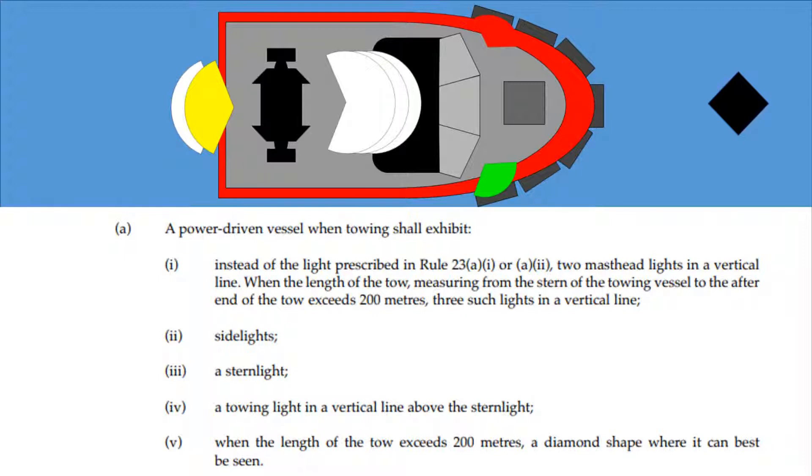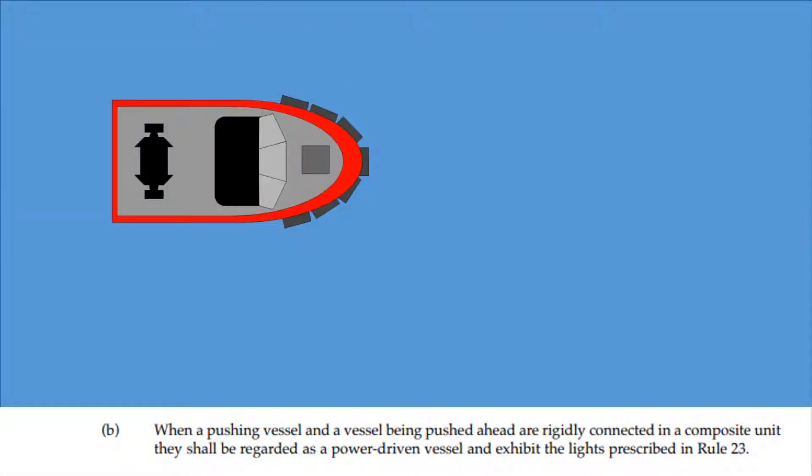When a pushing vessel and a vessel being pushed ahead are rigidly connected in a composite unit, they shall be regarded as a power-driven vessel and exhibit the lights prescribed in Rule 23. So this means because they're rigidly connected, they're effectively one boat or one ship, and therefore they would just exhibit the lights of a single power-driven vessel.